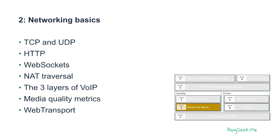Moving to signaling — networking basics — we'll start by looking at TCP and UDP, how they work, reliability of connections, ordering, and other networking aspects. Then we'll look at what happens in browsers, including HTTP and WebSockets — the tools available inside web browsers to communicate. We'll discuss NAT traversal, a very important lesson covering ICE, TURN, and STUN: how and why they're used, and best practices. There's also a lesson about the three layers of Voice over IP and where WebRTC fits.